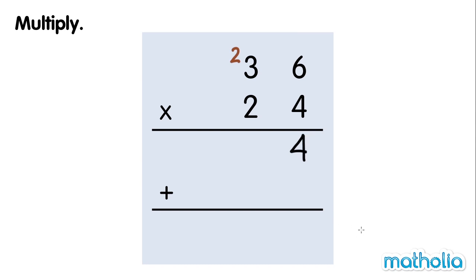Next, multiply the tens. 4 times 3 tens equals 12 tens. 12 tens plus 2 tens equals 14 tens.